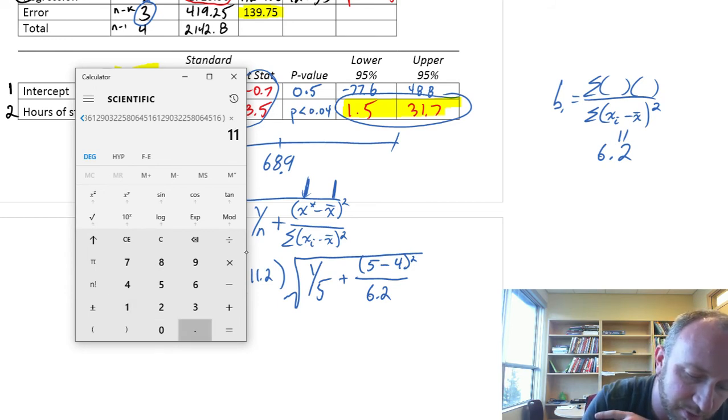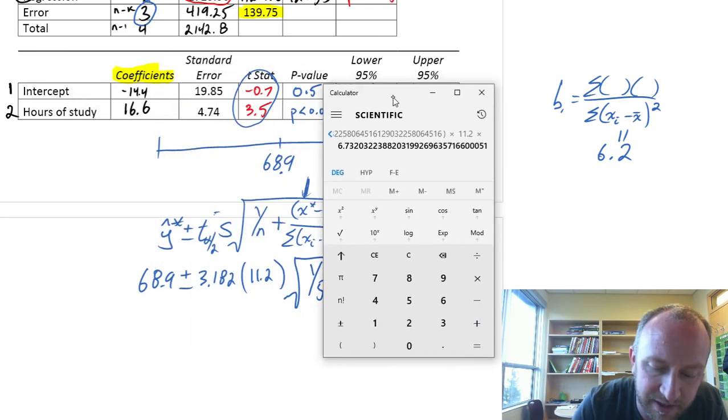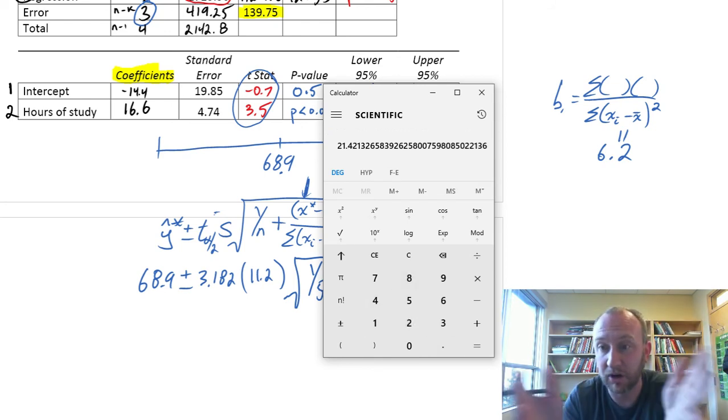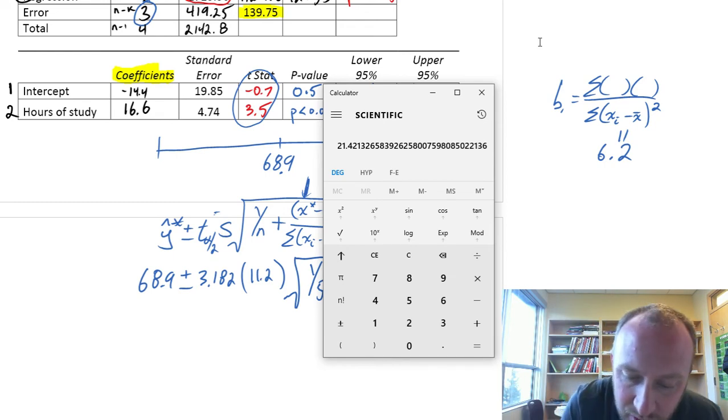and we'll times that by our standard error, 11.2, and we'll times that by our critical value, which was 3.182. So, there's that margin of error, 21.4.